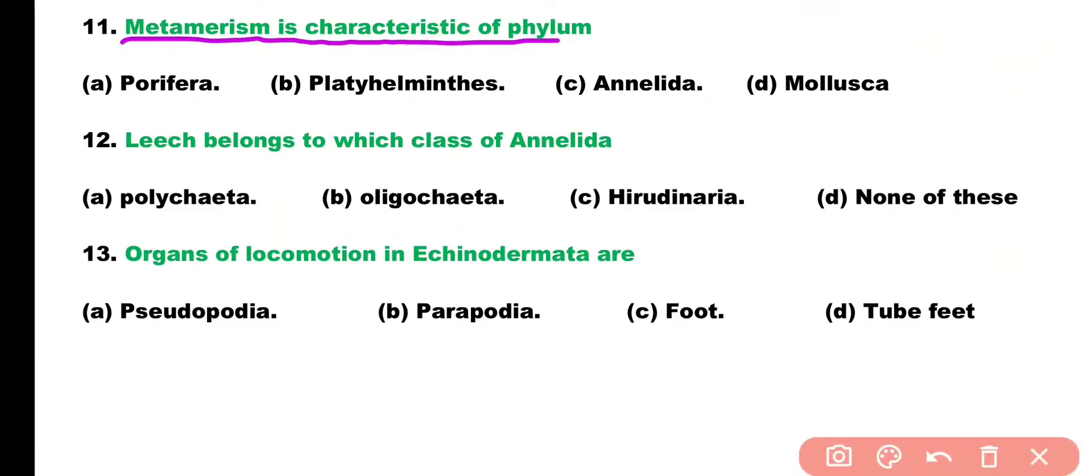Question 11. Options include Porifera, Platyhelminthes, Annelida, and Mollusca. Correct answer is Option C. Annelida. Metamerism is present in Annelida.